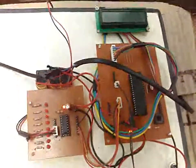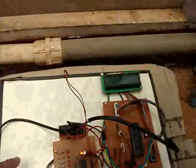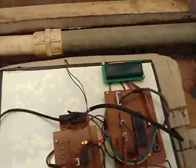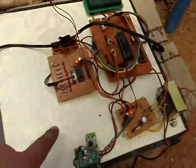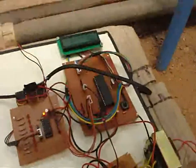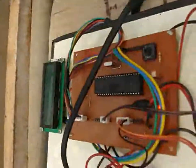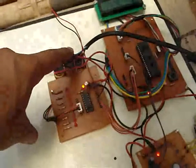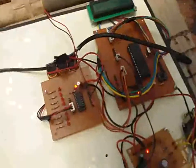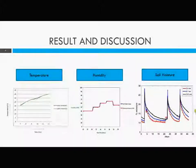In the control unit, Zigbee receives the control instructions from LabVIEW and the corresponding relay is switched. The display shows the current action taken by the unit. Each relay is connected to an actuator such as a sprinkler, heat blower, and a cooling fan. The results were plotted with the data stored in the spreadsheet.